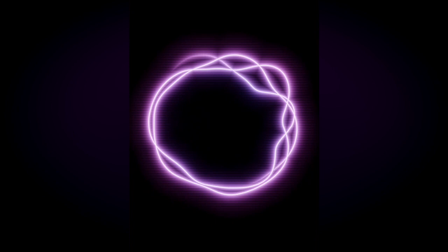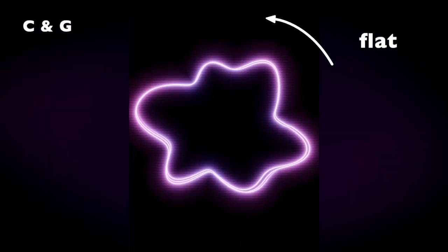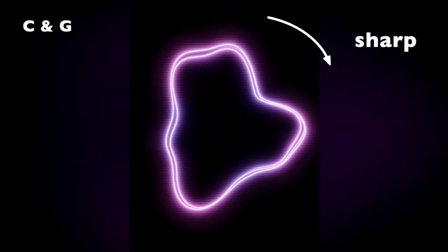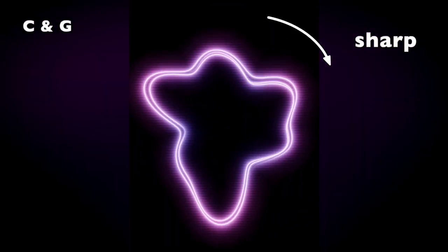Now, if the C remains in tune but the G becomes slightly flat, it will look like this. And if the G is slightly sharp, it's like this. When the G is out of tune with the root, we hear the volume pulsing up and down, and the shape on the screen also pulses in and out in a similar way.